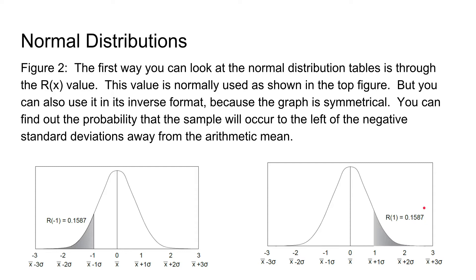Only the positive values are shown in the table, but you can also use this value to get the R negative 1 value. So negative one standard deviation away because the graph is symmetrical.